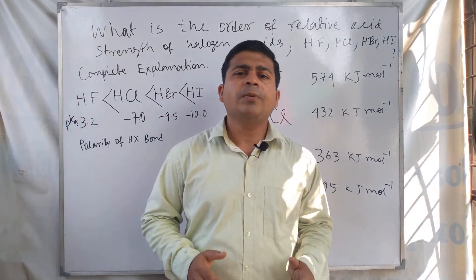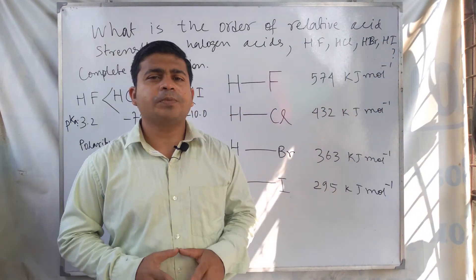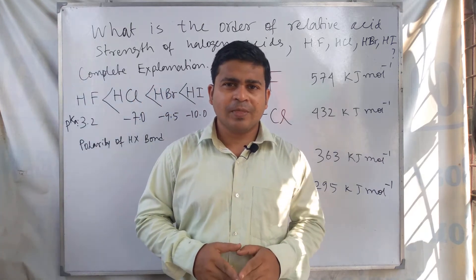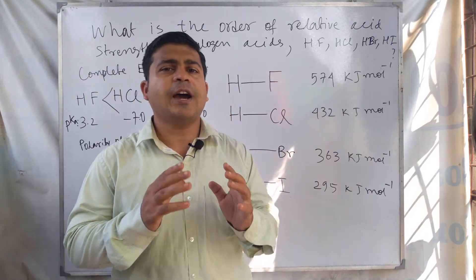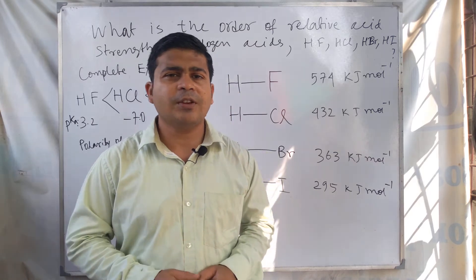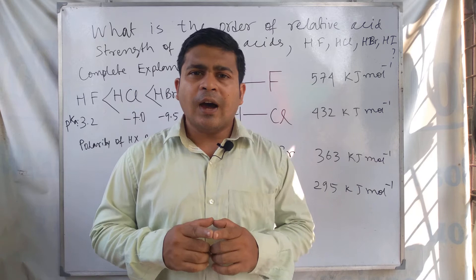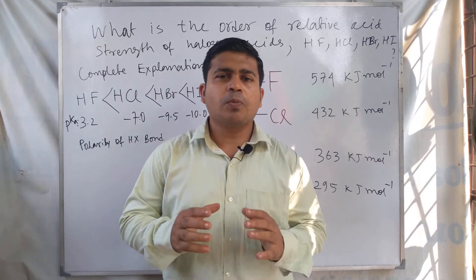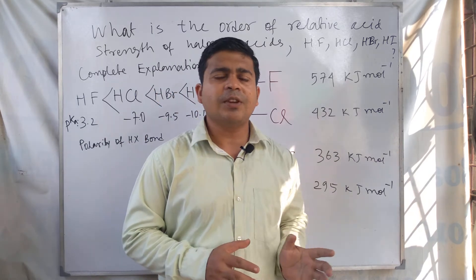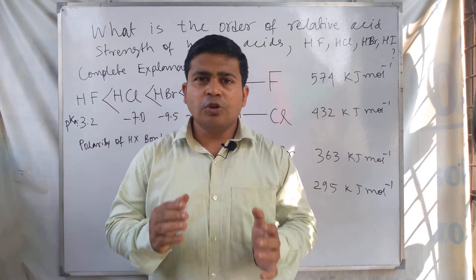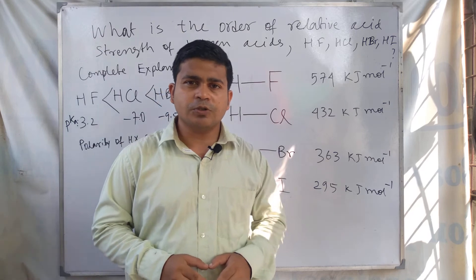What is the relative acid strength order of the halogen acids? Halogen acid means hydrofluoric acid, hydrochloric acid, hydrobromic acid, and hydroiodic acid. These acids dissolve in water, which is a polar solvent, and these compounds are called polar covalent compounds.